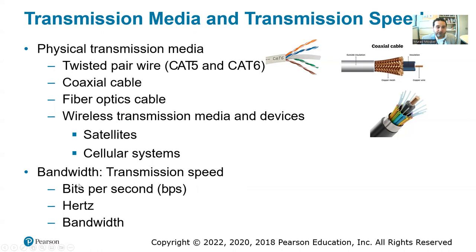Bandwidth refers to transmission speed. We use bits per second, and Hertz, which is the number of cycles per second. Bandwidth is the difference between the highest frequency and the lowest frequency.